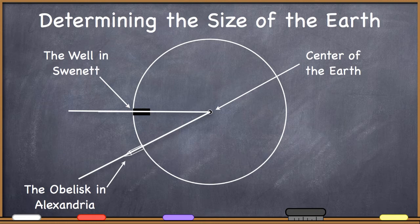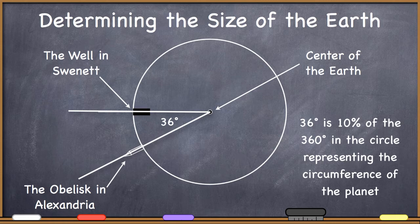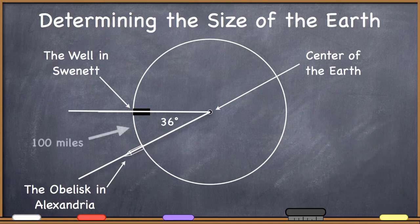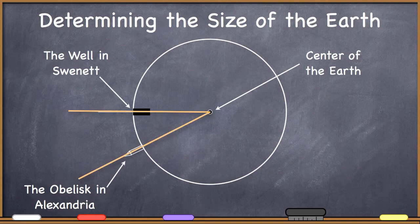So if Eratosthenes knew how many degrees there were between Swenet and Alexandria, then he would know what portion of the circumference of the earth was in between the two cities. So as an example, if there were 36 degrees between Swenet and Alexandria, he would know that the distance between Swenet and Alexandria represented 10% of the circumference of the earth. Then, if he could figure out how far it was between Swenet and Alexandria, then he would know that whatever that measurement happened to be was 10% of the circumference of the earth. If it were, as an example, 100 miles, then the entire circumference of the earth would be 1,000 miles.